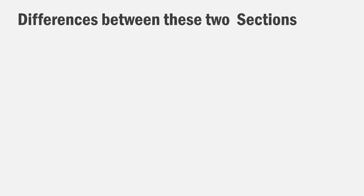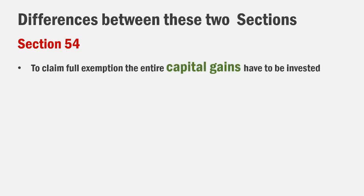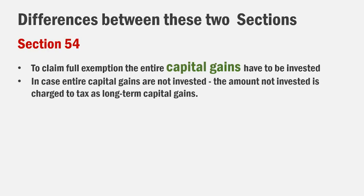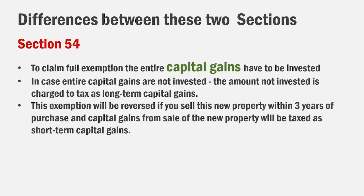Now, what is the difference between Section 54 and Section 54F? Under Section 54, you only need to invest the capital gains amount in the new house. If your capital gains are 20 rupees, you invest 20 rupees and the remaining sale proceeds are free. If you invest less than the capital gains, the exemption is proportionally reduced. If the property was held as short-term, it is taxed at slab rates.